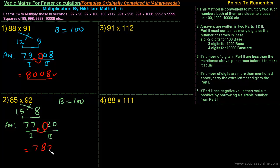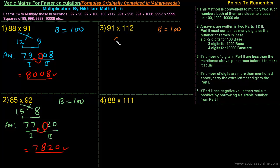Next question: 91 into 112. In this question, one number is less than its base and the other is more than its base — that is 100. 91 is 9 less than 100. 112 is how much less than 100? That is minus 12, because when numbers are more than the base we subtract from 100.